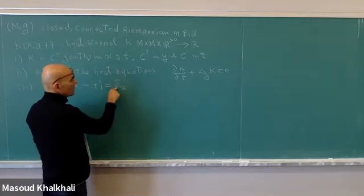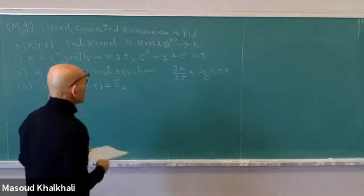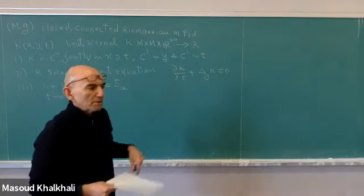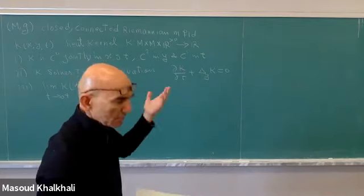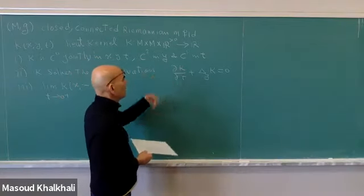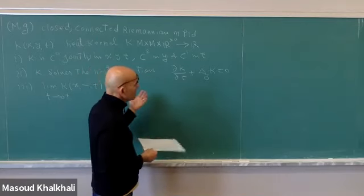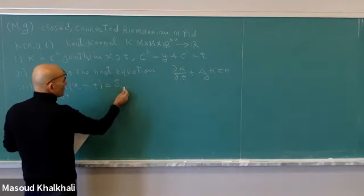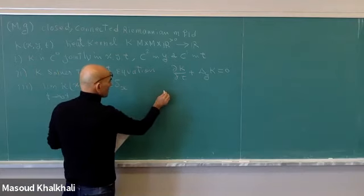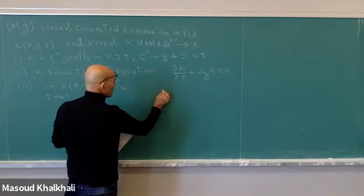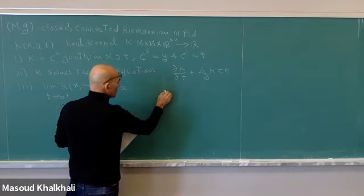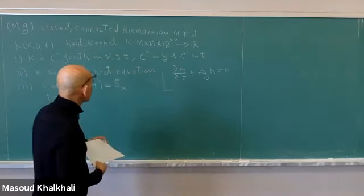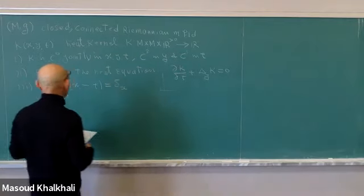Thirdly, the very important initial value property: the limit of K(x,y,t) as a function of y, as t goes to zero plus, is equal to δₓ. This was the delta function at x. The interpretation is that this is the density of heat — which is another name for temperature in original theories — and we can consider it as temperature.